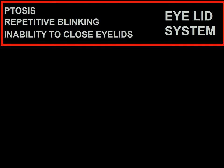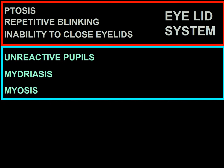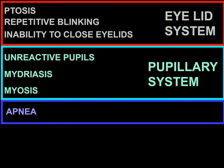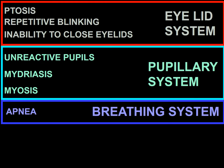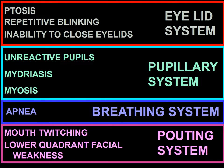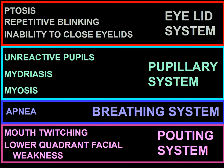Inability to close the eyelids corresponds to involvement of the eyelid system. Unreactive pupils, mydriasis, and miosis correspond to involvement of the pupillary system. Apnea corresponds to involvement of the breathing system. Mouth twitching and lower facial quadrant weakness correspond to involvement of the pouting system. As you can see, this step going from a neurological finding to the neurological functional system does not require extensive memorization — merely intuition and common sense.